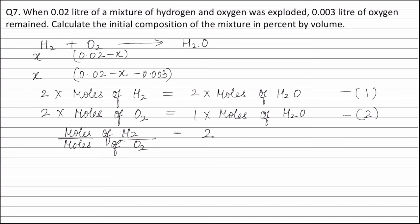Under similar conditions of temperature and pressure, volume is directly proportional to number of moles. Therefore, in this equation we can also write volume of hydrogen that is x litre divided by volume of oxygen, that is 0.02 minus x minus 0.003 litres is equal to 2.